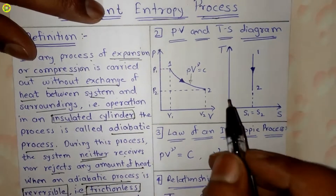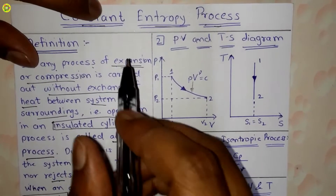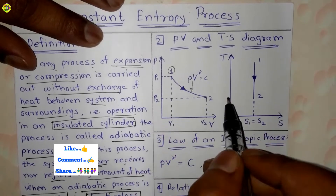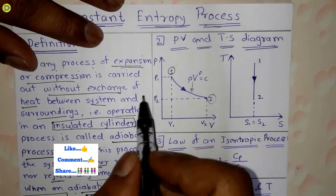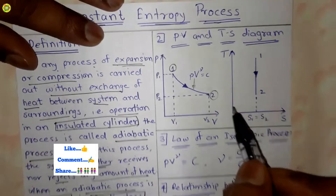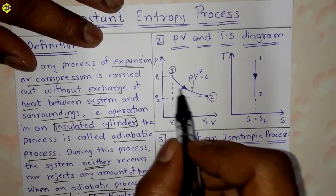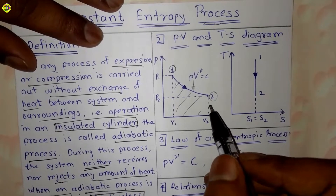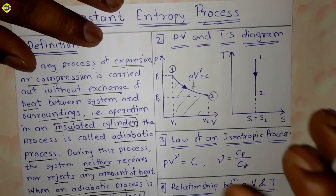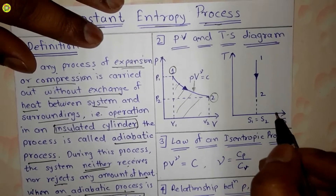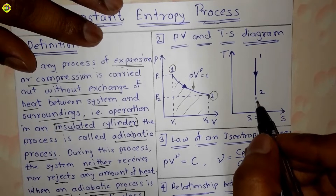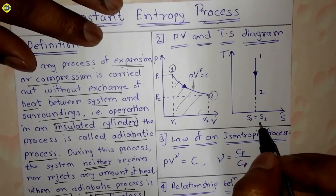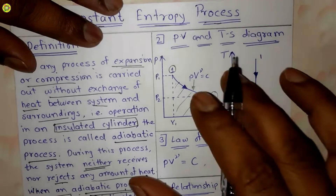Now we will see the PV and TS diagrams of the constant entropy process. On the PV diagram, state one and state two are shown, and the area under the curve represents the work done. On the TS diagram, we get a straight vertical line from state one to state two, where S1 is equal to S2.